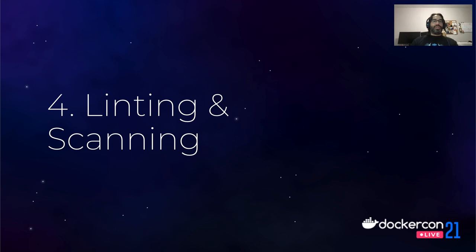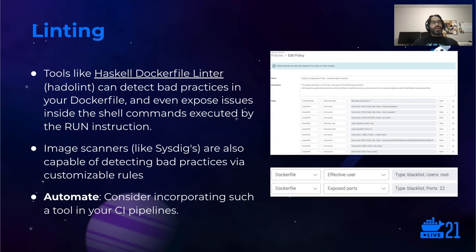Now a quick discussion about linting and scanning. Fortunately, there are tools — to name one example, the Haskell Dockerfile Linter — that can detect errors and bad practices in the Dockerfile and tell you about them in advance. Linting can even expose issues using the shell commands executed by RUN instructions. Other tools, like the Sysdig image scanner, apart from detecting vulnerabilities, can also detect bad practices — for example, detecting a Dockerfile with an effective user root or an exposed port 22, the SSH server port. As usual, automation is better than manual, so consider incorporating such tools in your CI/CD pipeline.